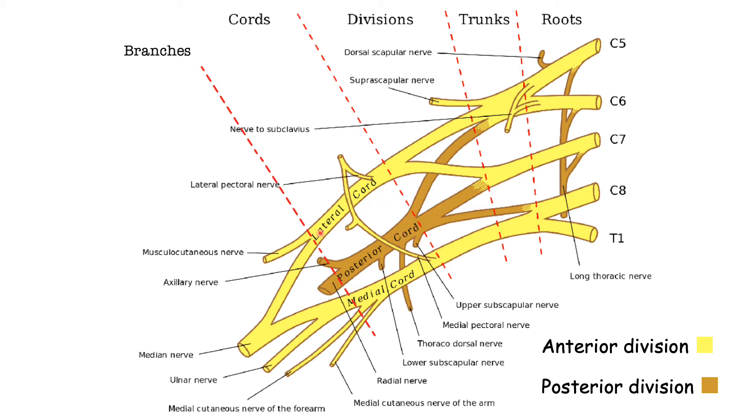Now the lateral cord is formed by the anterior division of the superior and middle trunks. The medial cord on the other hand is just formed by the anterior division of the inferior trunk, just a continuation.